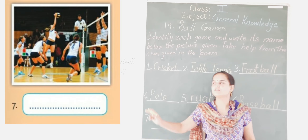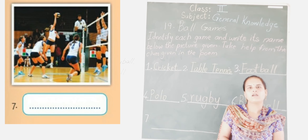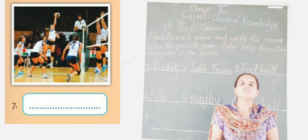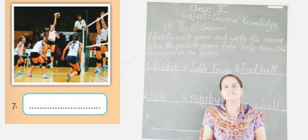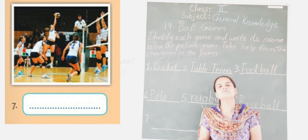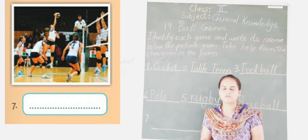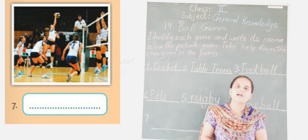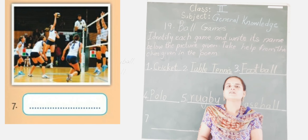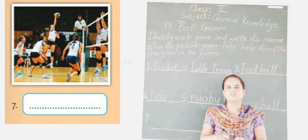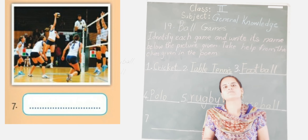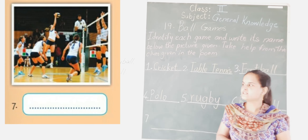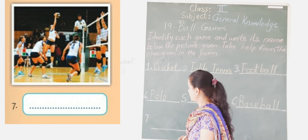Now the seventh one — can you see on the board which game it is? Have you played this game? This game is volleyball. There are two teams on opposite sides and they use their hands to hit the volleyball. There is a net between the opposite teams and they follow specific rules. It is also played on a square shaped court. So the seventh game is volleyball.